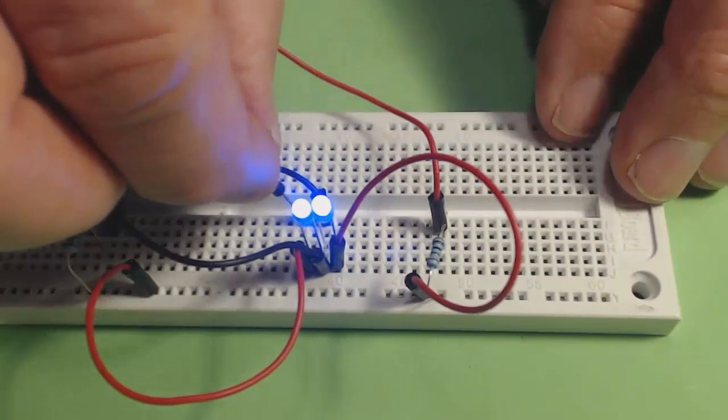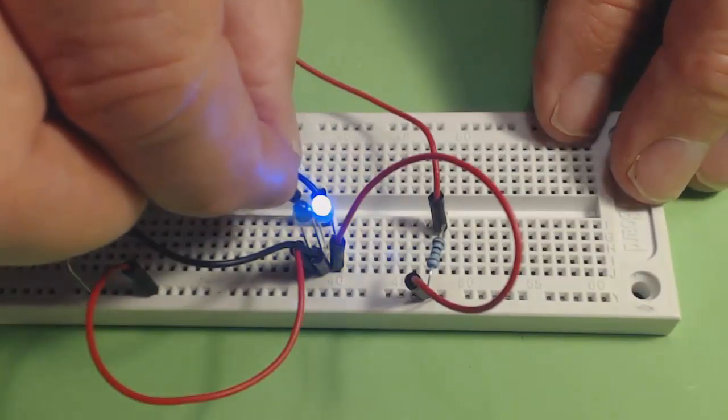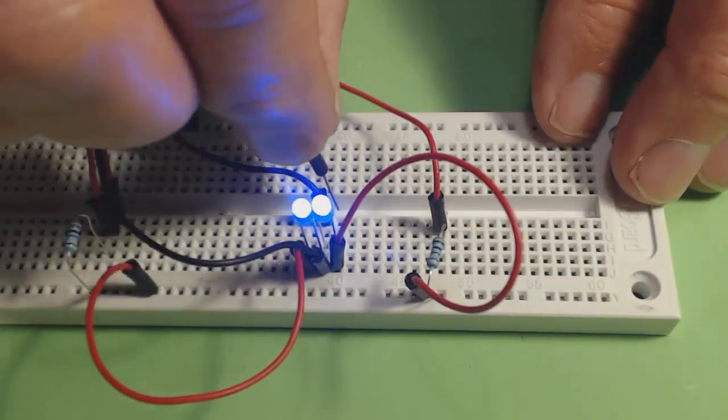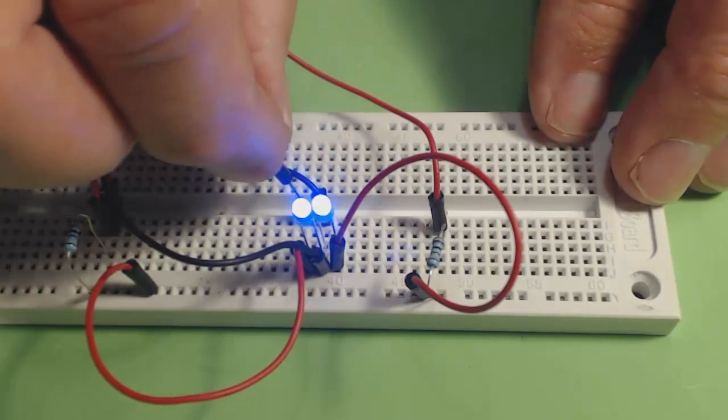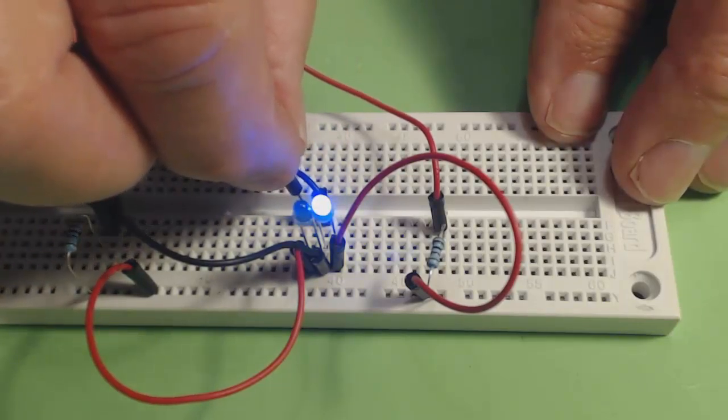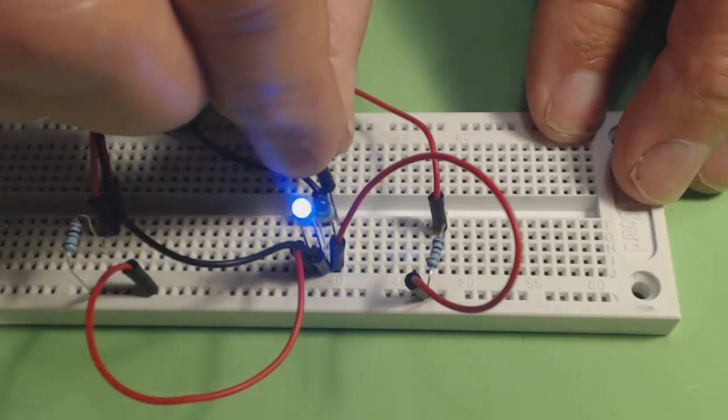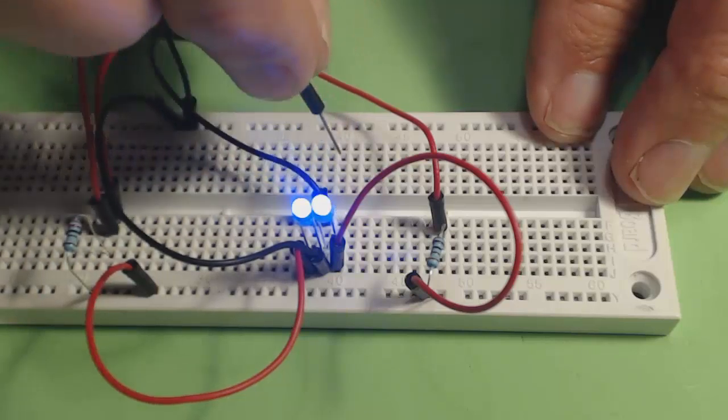If I put a jumper into the middle here and touch it on this side, that LED goes out. I touch it over here, the second LED goes out. I'm just shorting out the LED. That's what the encoder is doing as I turn the shaft.